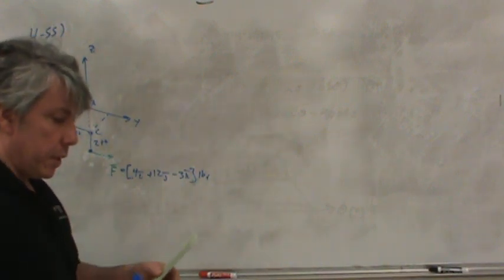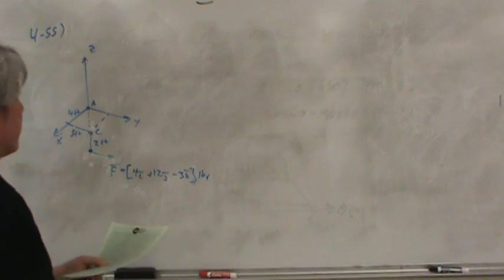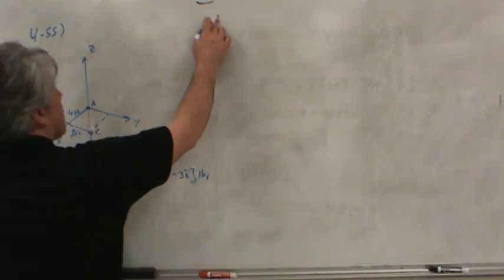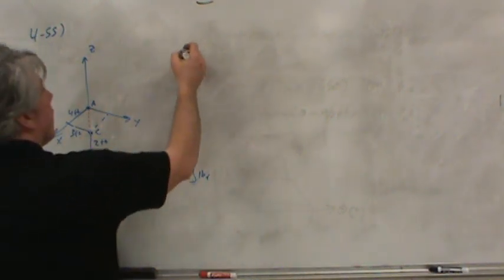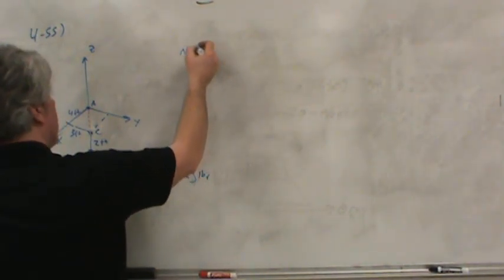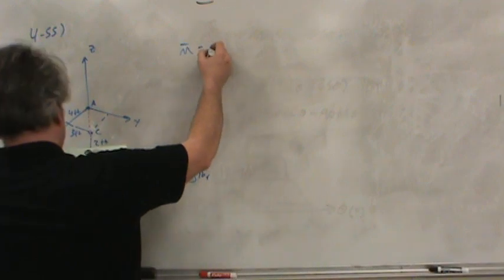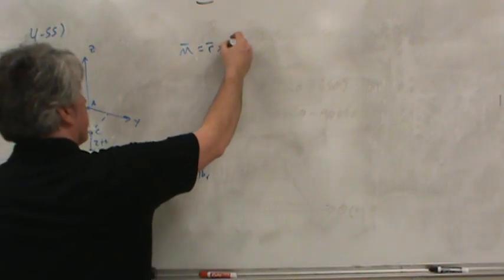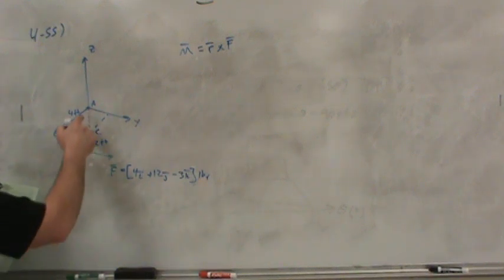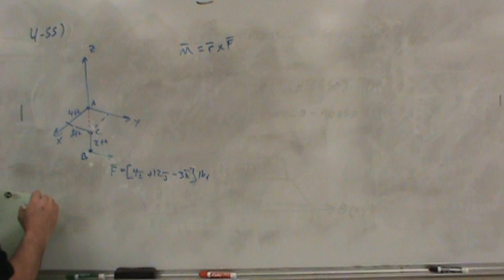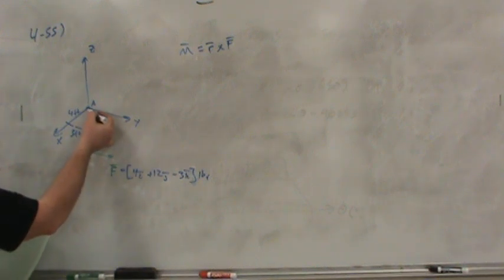Now, probably the easiest way to do this, first of all, is to start with a vector. Now, why would I start with a vector? Well, I can calculate the moment by taking a moment arm and crossing it with the force vector F. And so what I'm going to do is, since this is point B down here, there's also a vector that moves from A to B.